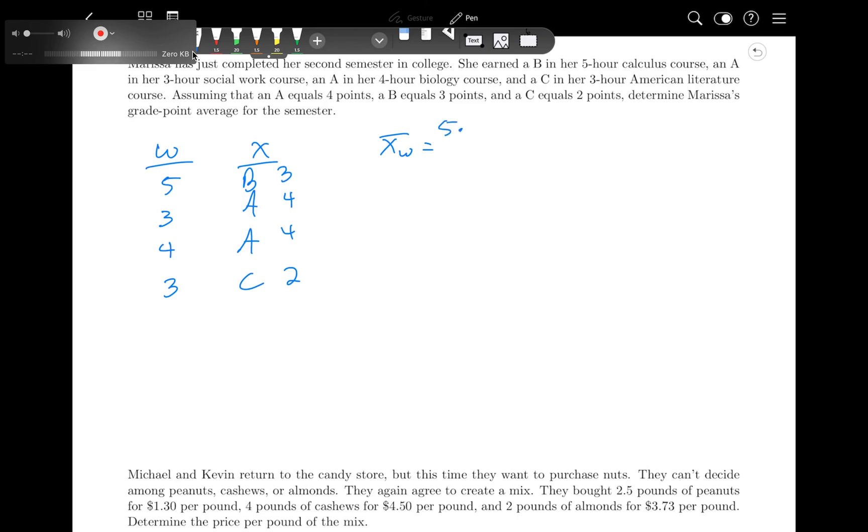So we take the weights times the values. So five times three plus three times four plus four times four plus three times two, all over five plus three plus four plus three. So her GPA is 3.27.